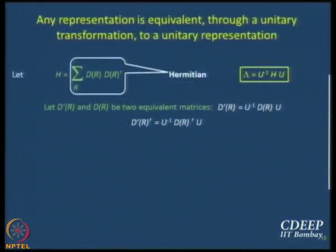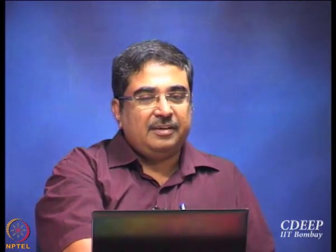Will you believe me if I write this? The adjoint of D'_R is the similarity transformation of the adjoint of D_R. U is the matrix of eigenvectors of H, and lambda is a diagonal matrix — not U. So far so good. Now with this we can start playing.